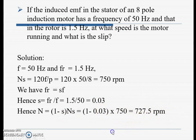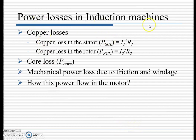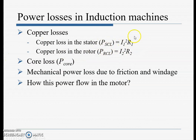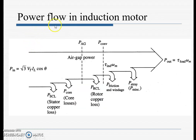Next are the different types of losses in the induction machine: copper losses in the stator (I₁²R₁), copper losses in the rotor (I₂²R₂), core losses, and mechanical power losses due to friction and windage. In the power flow of the induction motor, the input power is √3 · V · I · cos φ, where cos φ represents the power factor.